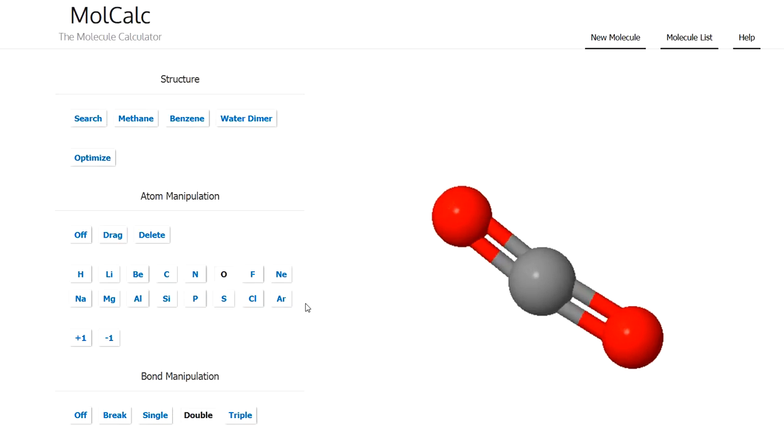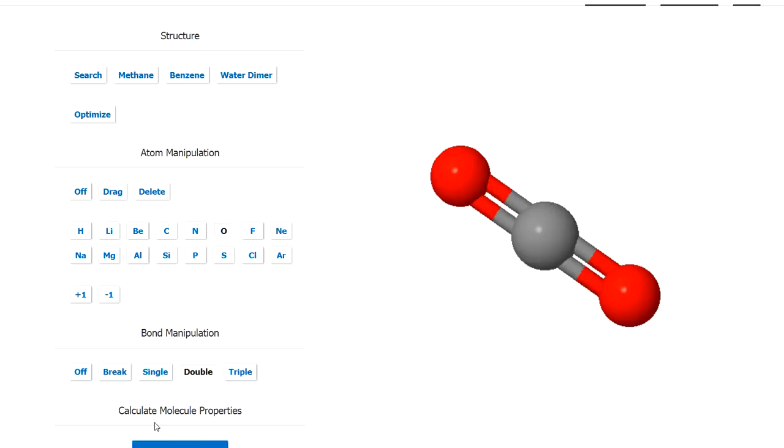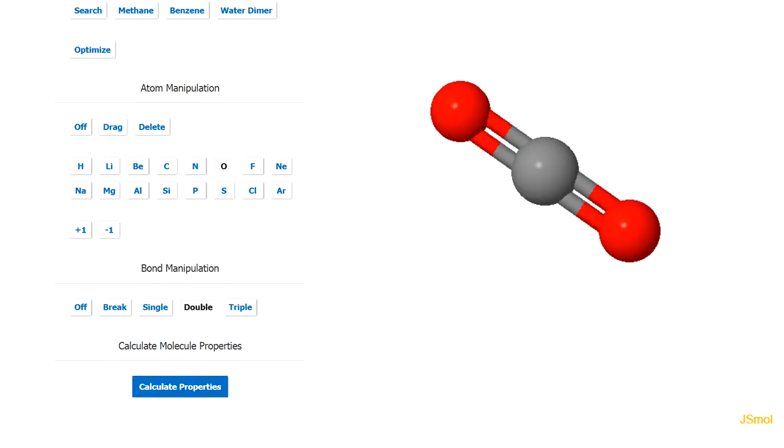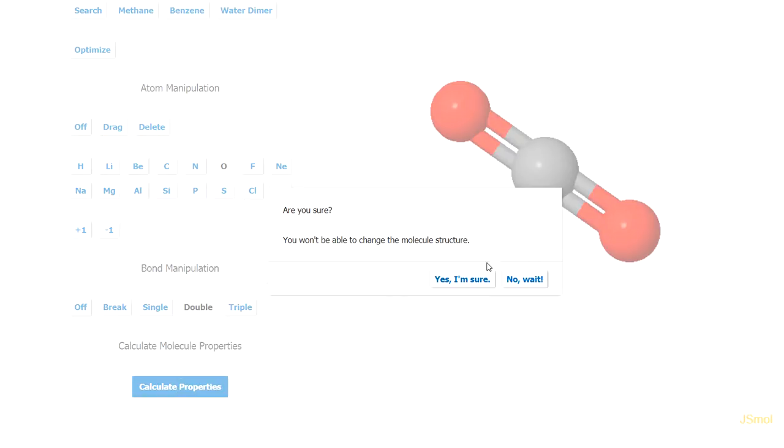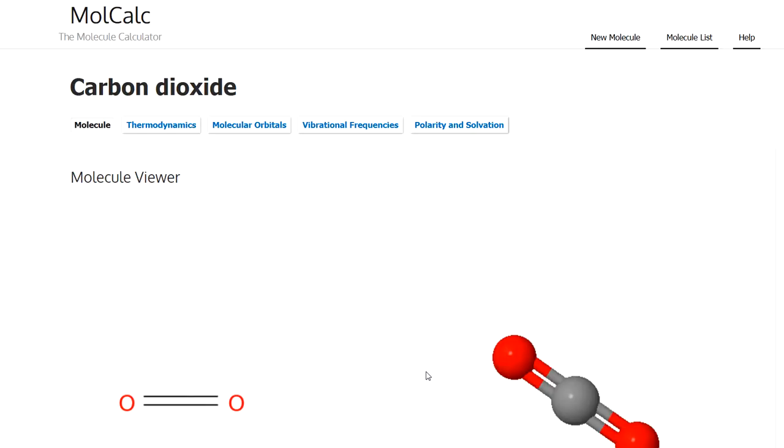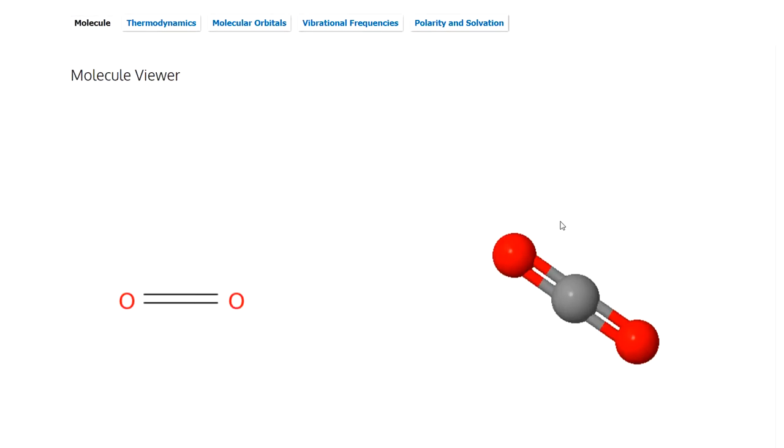And while that's optimizing, I just say this is a great program, and it can calculate all kinds of properties like bond lengths, bond angles, all kinds of things about any molecule you can think of. It's still optimizing. I think it's almost done now. All right, now we want to calculate the properties. And there's our carbon dioxide.